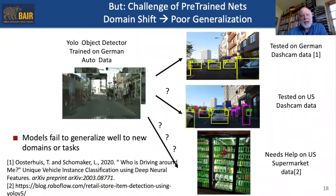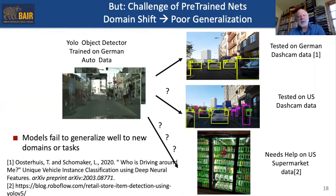For example, if you're looking for an object detector to use in a Walmart, you can download a YOLO object detector. But if you look carefully, that pre-trained model may have been trained and tested on German auto data. It works very well on identifying cars in German traffic, and probably well on U.S. driving conditions, but we may not be sure it will meet our needs for identifying objects in a supermarket.